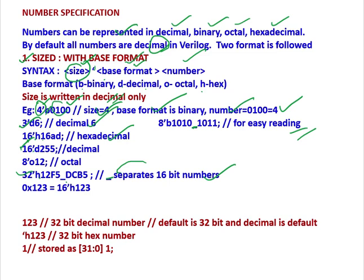16'd255 is a 16 bit decimal number. 8'o12 has O for octal, 8 bit octal. And 0x123 means it is a hexadecimal number 123.